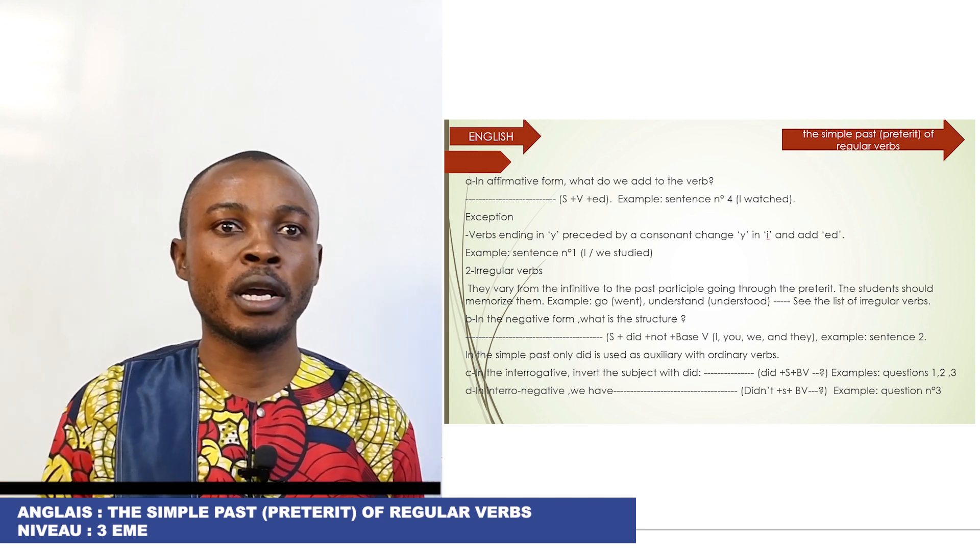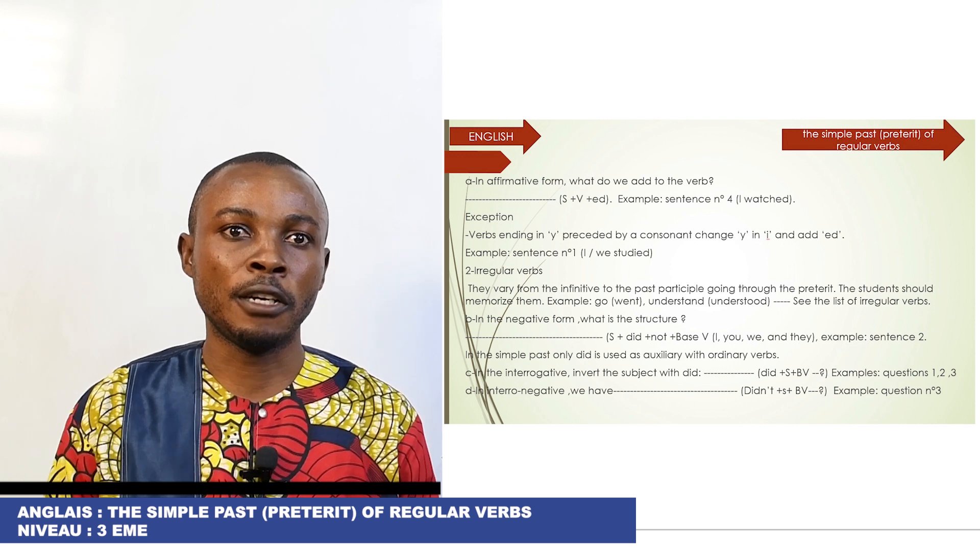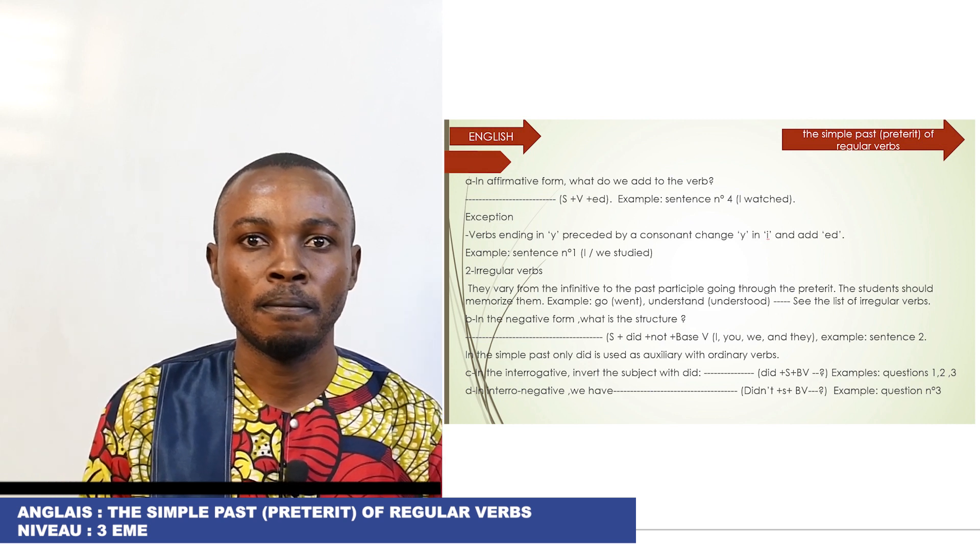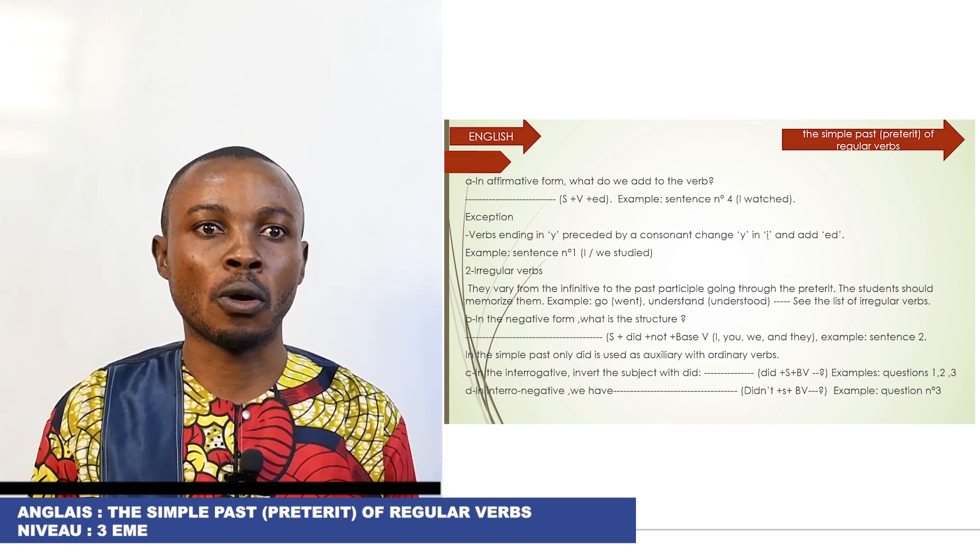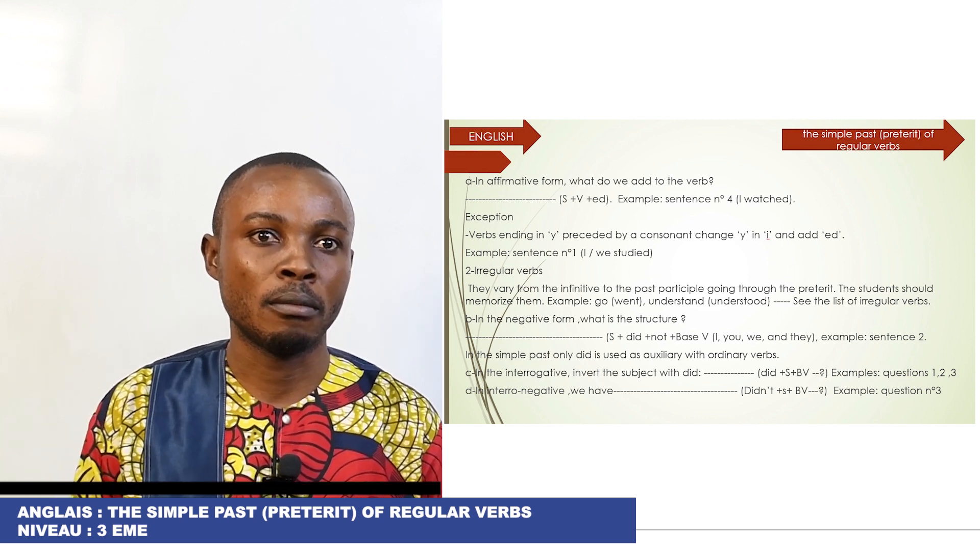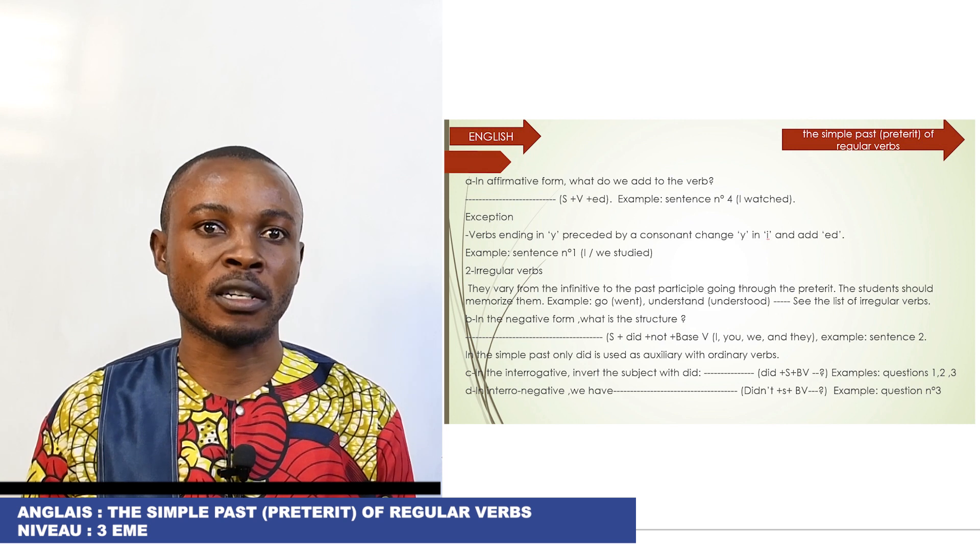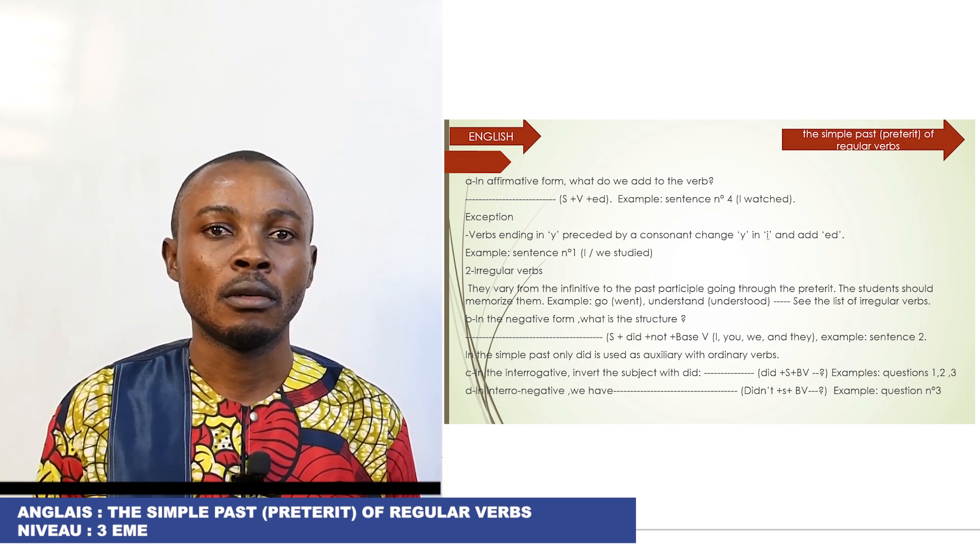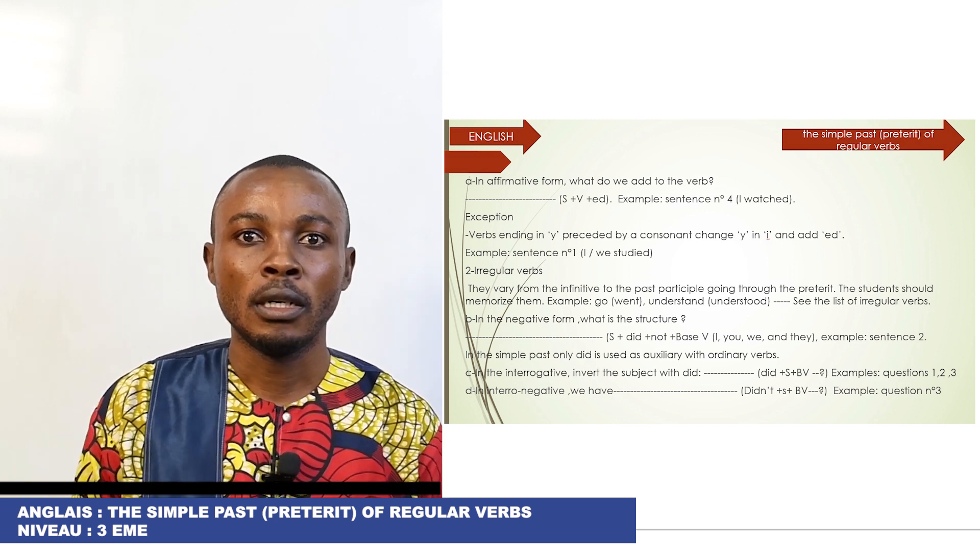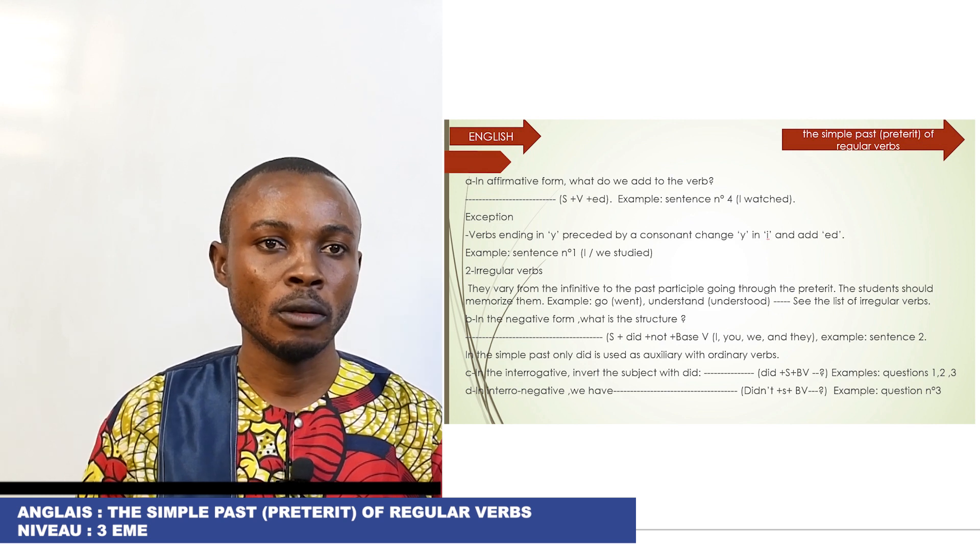Number 2, we have irregular verbs. They vary from the infinitive to the past participle going through the preterit. The students should memorize them. Example: go, the past is went. Understand, the past is understood. See the list of irregular verbs.